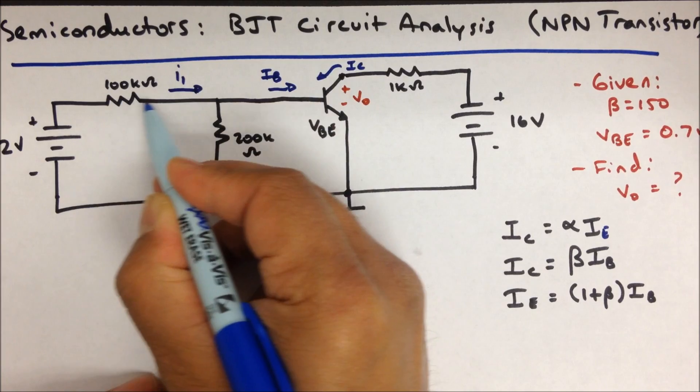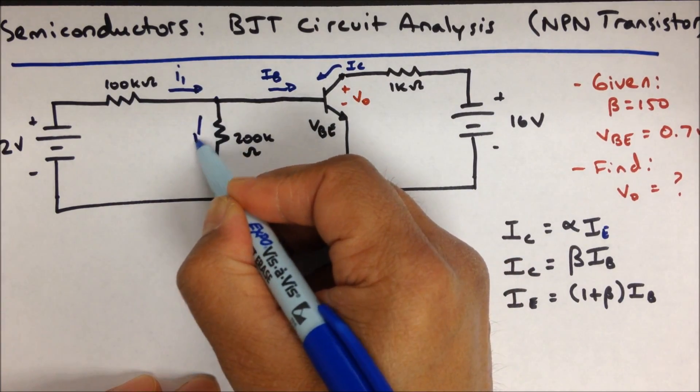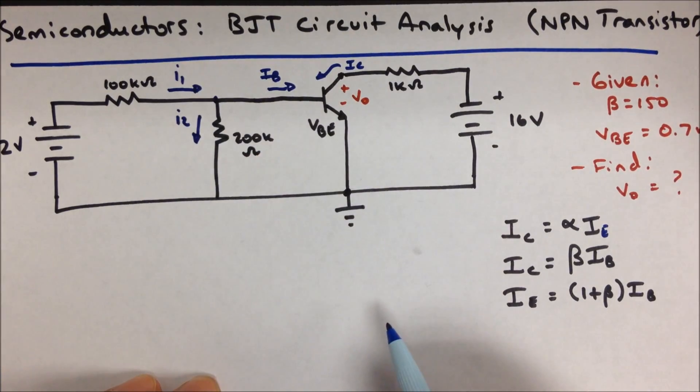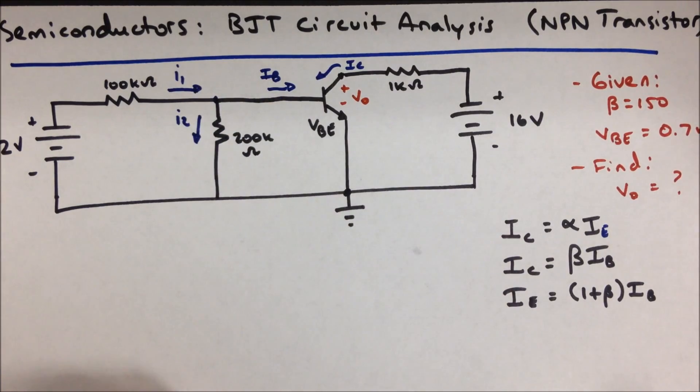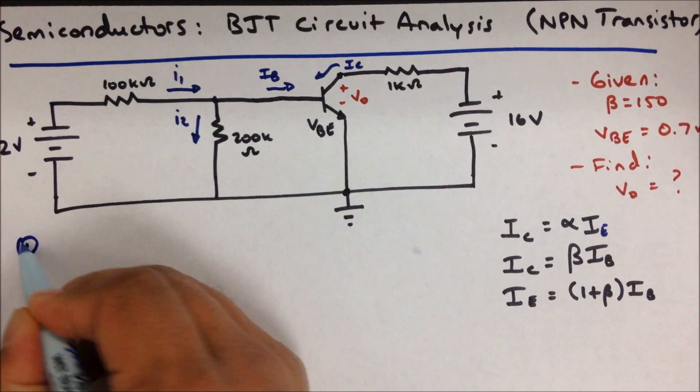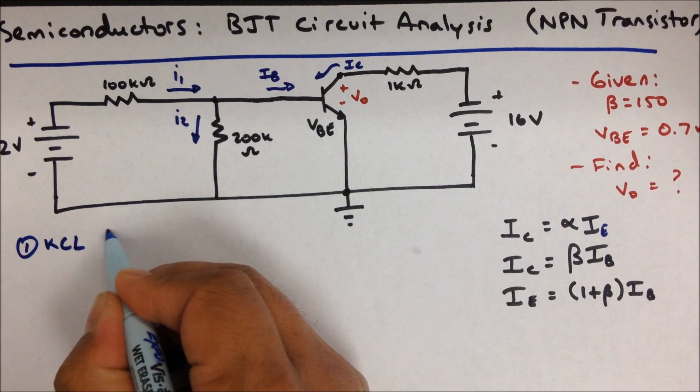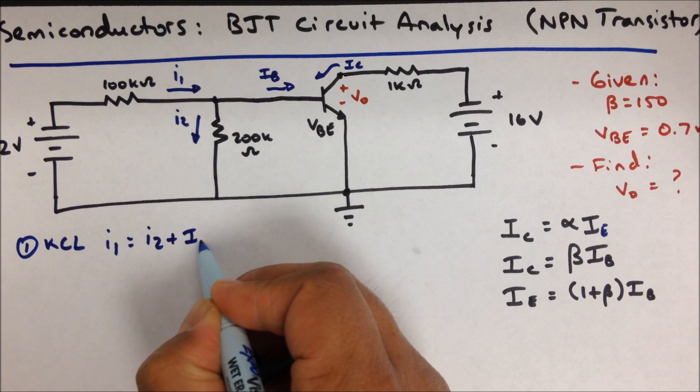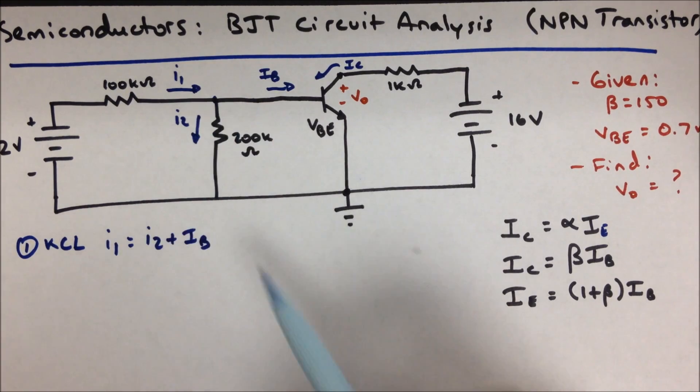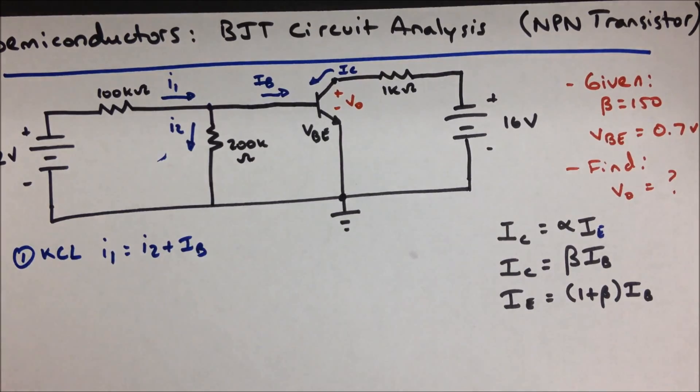Let's call this current going into this node I1. Let's call this current coming out of that node I2. Now we have a relationship here between these three currents using Kirchhoff's current law. We know that I1 equals I2 plus IB, and now it's a matter of finding out what those currents are.